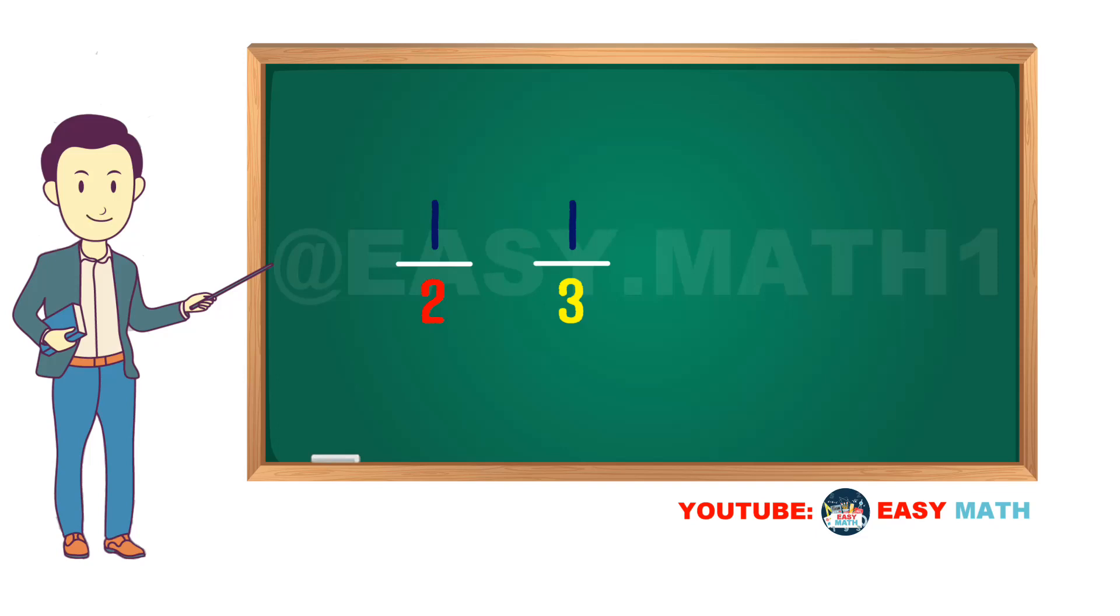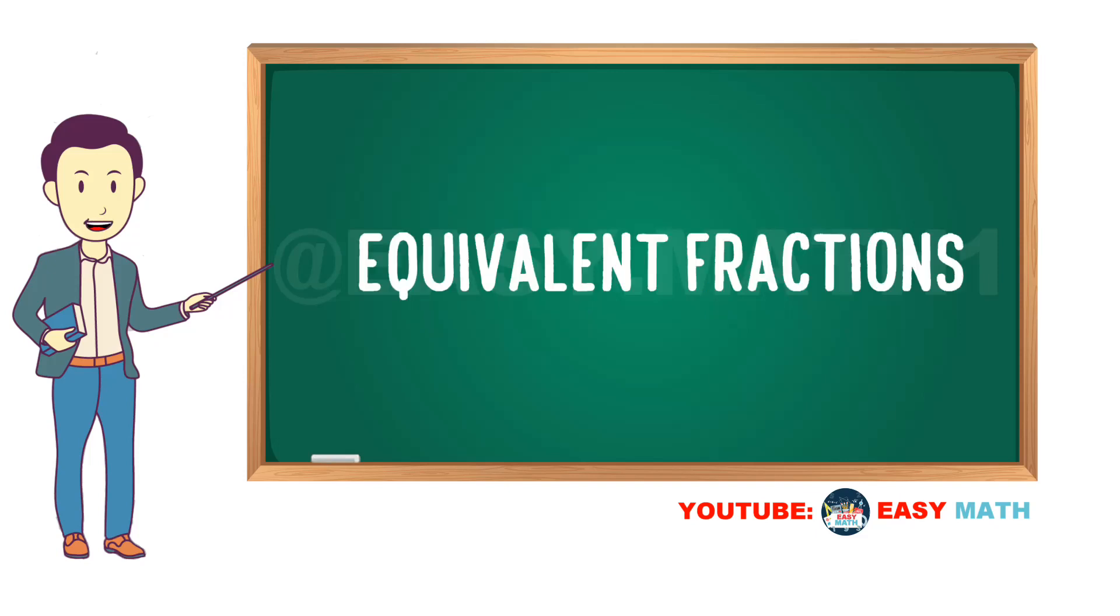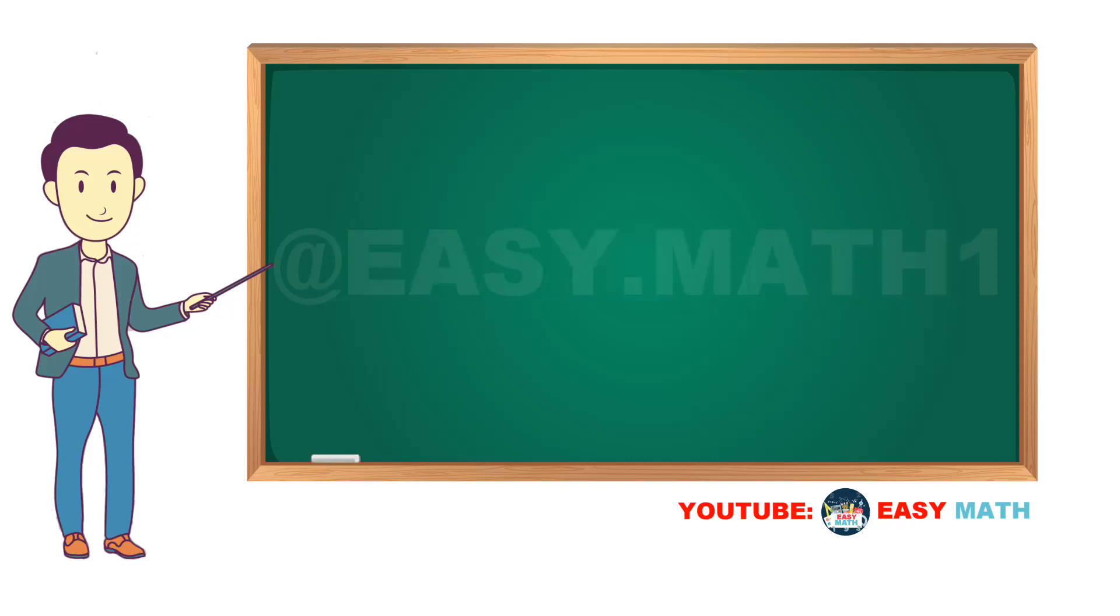When two or more fractions have the same result and they are equal to each other after simplification, they're called equivalent fractions, like one half and two quarters, or one third and three ninths.